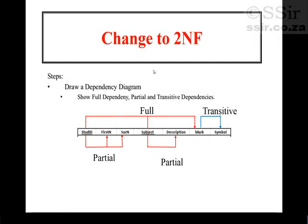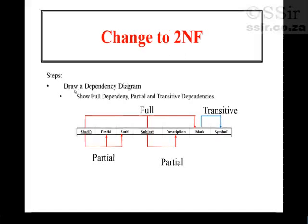Because our database is in first normal form, we are ready to start moving towards second normal form. The first step is to draw a dependency diagram.